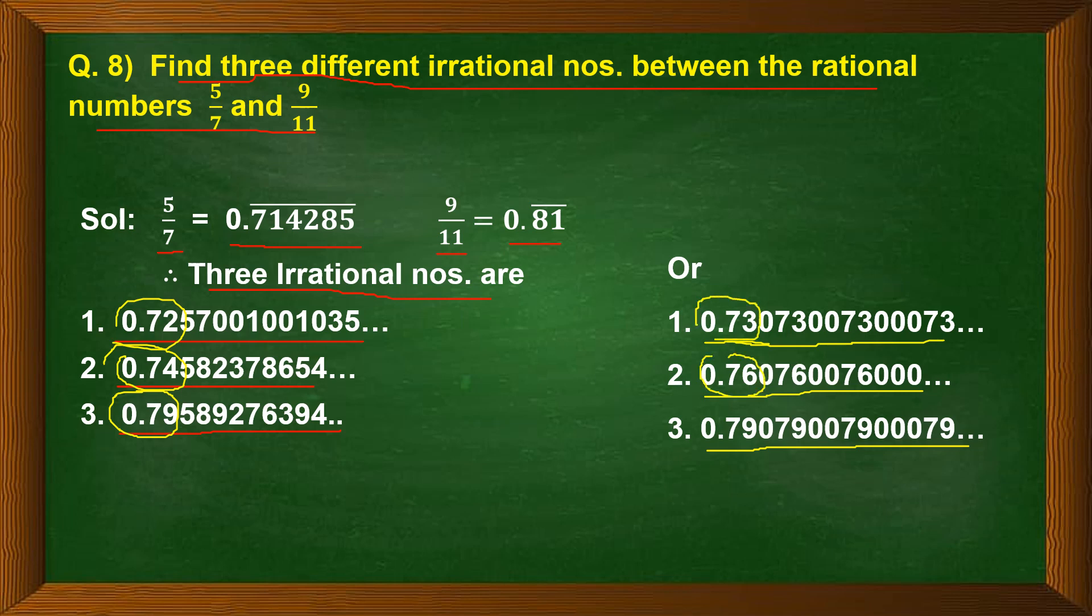So these are the three irrational numbers which we have found between the two rational numbers, that is 5/7 and 9/11. Now let us take up the ninth question.